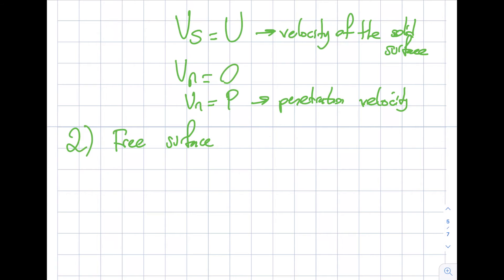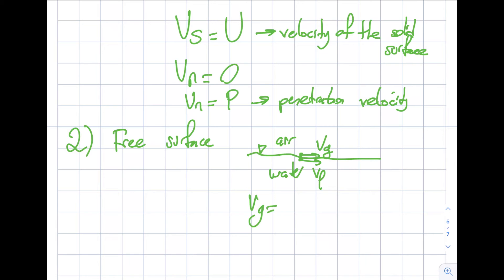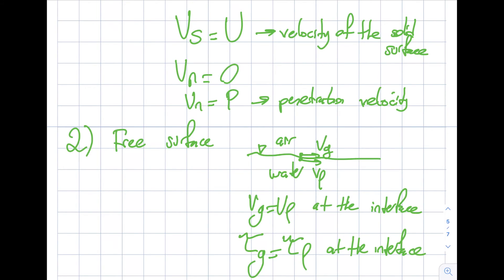The second, less obvious boundary condition is the free surface. At a free surface — say, the interface between water and air — there is no slip between the two fluids, so vgas = vliquid at the interface. Additionally, the shear stresses at the interface must be the same for both fluids. The forces must balance at the boundary, and we will take advantage of this condition.